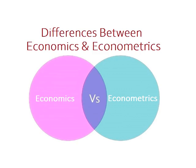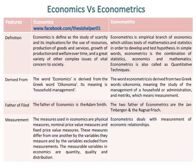Differences between Economics and Econometrics. Economics is defined as the study of scarcity and its implications for the use of resources, production of goods and services, growth of production and welfare over time, and a great variety of other complex issues of vital concern to society. Econometrics is the empirical branch of economics which utilizes tools of mathematics and statistics in order to develop and test hypotheses.